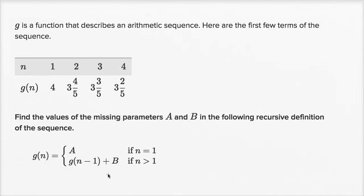Figuring out a is actually pretty straightforward. If n is equal to 1, the first term when n equals 1 is 4. So a is equal to 4. We could write this as g(n) equals 4 if n equals 1.